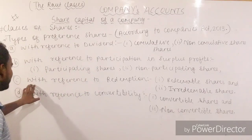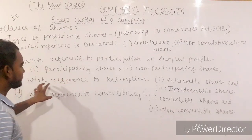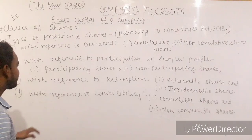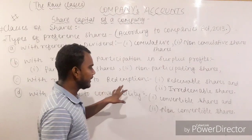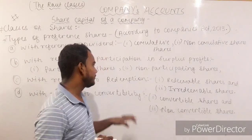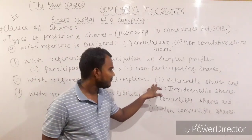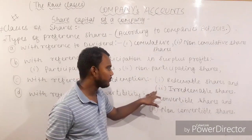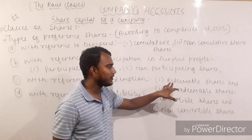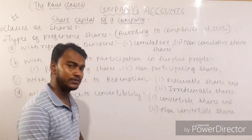The third respect of classifying preference shares is from the point of redemption. Redemption means the repayment of capital. From this point of view, preference shares can be divided into two categories broadly: the first one is called redeemable preference shares and the second one is called irredeemable preference shares.